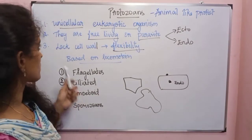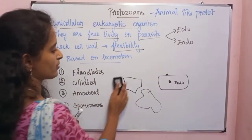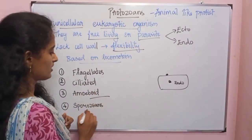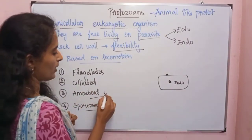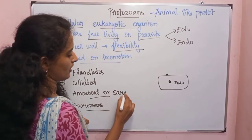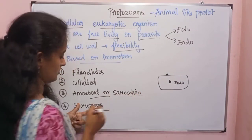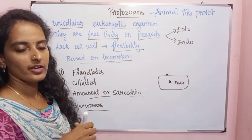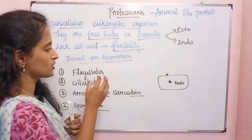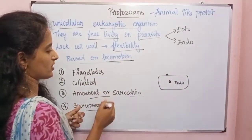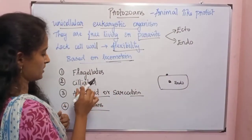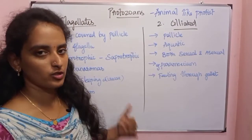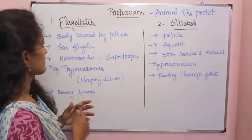Protozoans are of four types: flagellates, ciliates, amoeboids, and sporozoans. Amoeboids are also called Sarcodina. These four types are classified based on their locomotory organ.